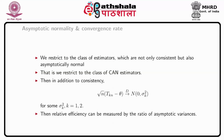Thus, we restrict to the class of estimators which are not only consistent but also asymptotically normal — that means we are concentrating on CAN estimators, that is, Consistent Asymptotically Normal estimators. This is defined by the relation that TKn minus theta has an asymptotic normal distribution with mean 0 and variance sigma_k squared over n, for K equal to 1 and 2. Then, as before, relative efficiency can be measured by the ratio of asymptotic variances.